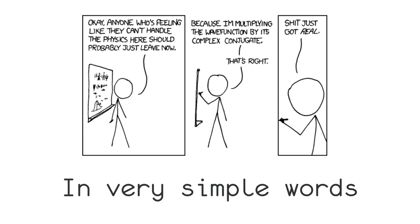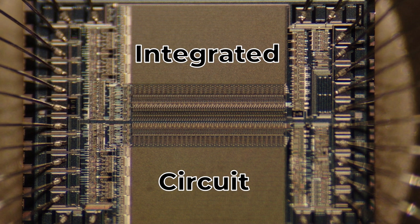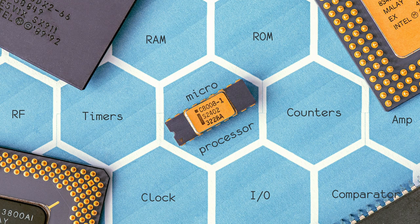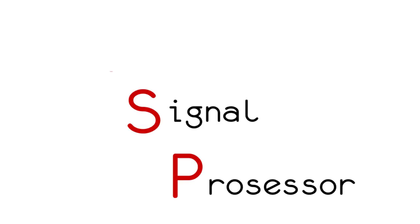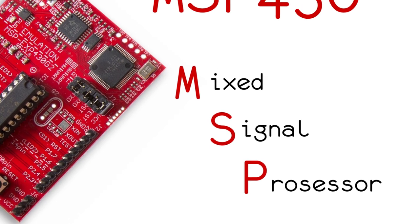In very simple words, a microcontroller is an integrated circuit used as a control device which incorporates at least one microprocessor or CPU, along with RAM, ROM, clock, timers and I/O peripherals. Some microcontrollers also include hardware for analog signal processing and they are known as mixed signal processors, like the Texas Instruments MSP430 series.